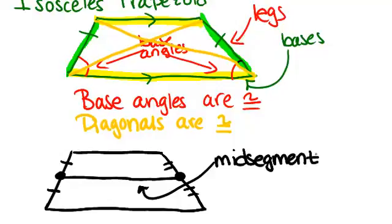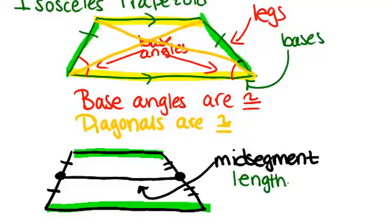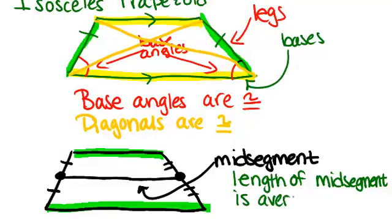The length of the mid-segment is always the average of the two bases. To find the mid-segment length, you add the lengths of both bases and divide by two.